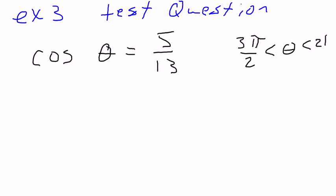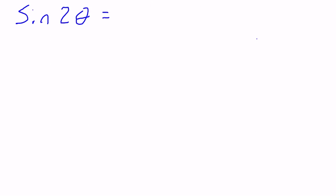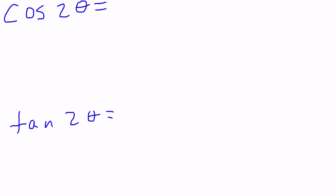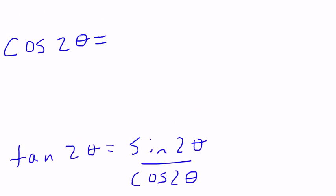And then they say find the sine of 2 theta, find the cosine of 2 theta, and find tangent of 2 theta. Well, tangent we can find once we find sine over cosine. So once we find the first two here, we just need to divide them to find tangent.